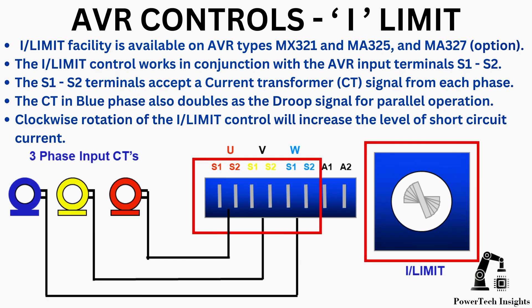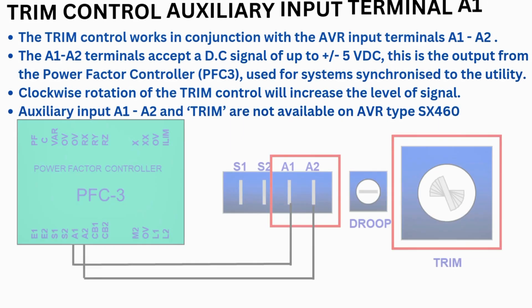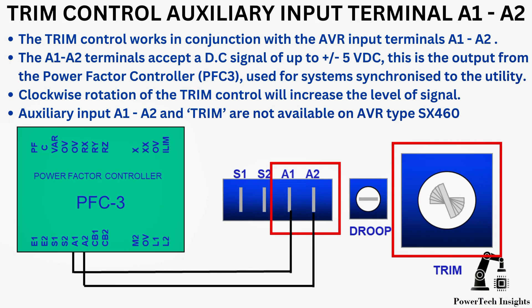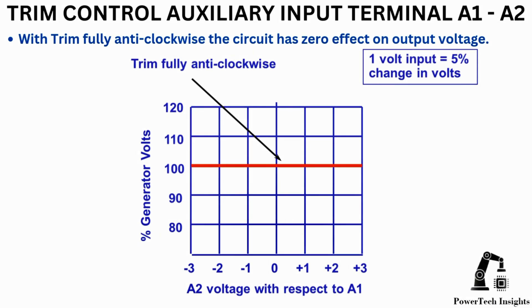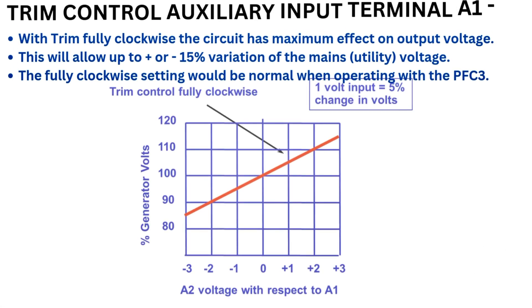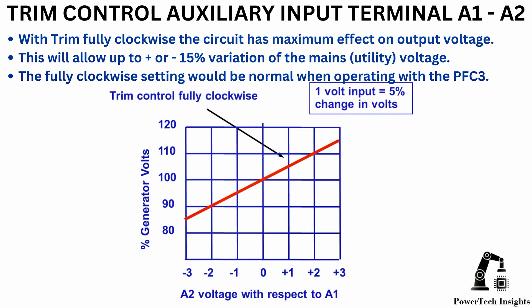Trim control, auxiliary input terminals A1, A2. The trim control works in conjunction with the AVR input terminals A1, A2. The A1, A2 terminals accept a DC signal of up to plus 5 VDC. This is the output from the power factor controller, used for systems synchronized to the utility. Clockwise rotation of the trim control will increase the level of signal. Auxiliary input A1, A2, and trim are not available on AVR type SX460. With trim fully anti-clockwise, the circuit has zero effect on output voltage. With trim fully clockwise, the circuit has maximum effect on output voltage, allowing up to ±15% variation of the mains utility voltage. The fully clockwise setting will be normal when operating with the PFC3.